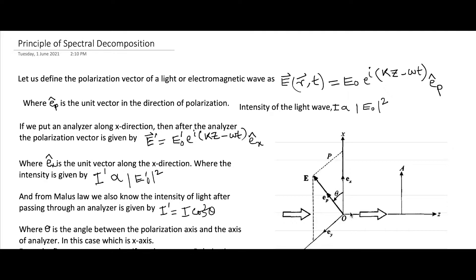What actually is Spectral Decomposition? For this, I am taking an example of polarized light. Let us define the polarization of the light as E, which is also known as the light vector. From Maxwell's equation, this is the solution and it is given by E naught into e to the power i kz minus omega t. I am assuming that the light is propagating along the z direction — that's why there is z. K is the wave vector. And E p-cap is the unit vector in the direction of polarization.